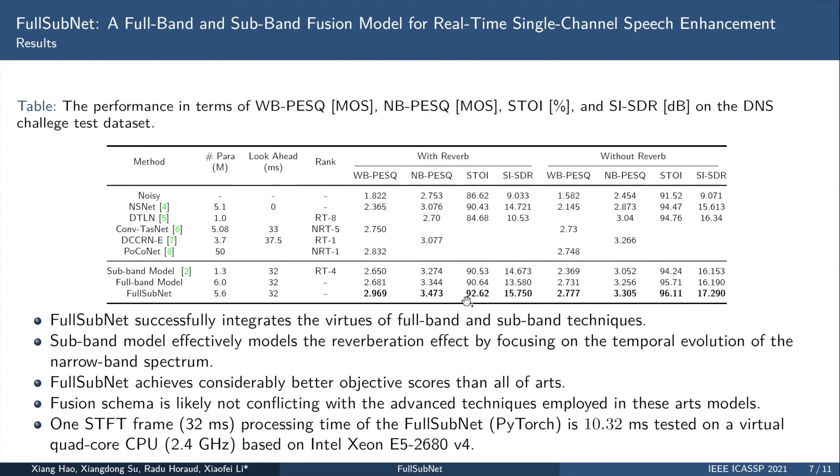In addition, the performance of the FullSubNet model is better than the top-ranked methods in the DNS challenge, whether it's a real-time track or non-real-time track. We believe that this fusion method may be integrated into these methods to further improve their performance. Also, we list the processing time of the FullSubNet based on PyTorch.